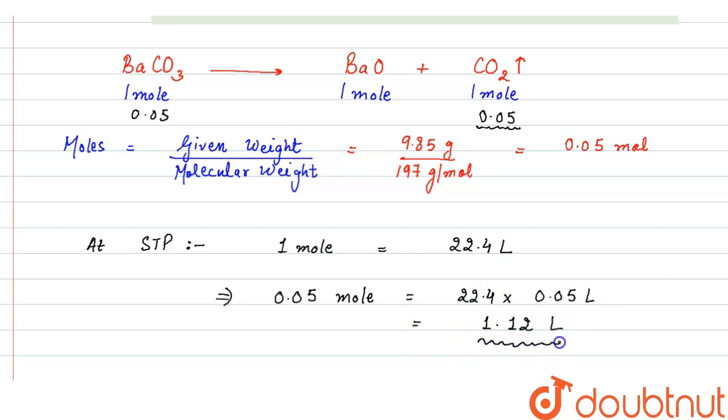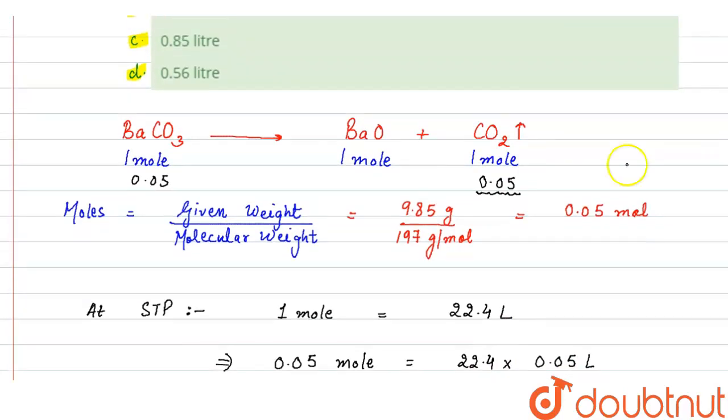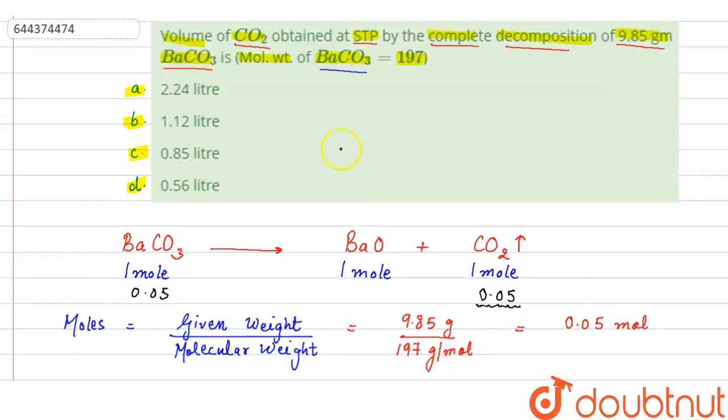So this is the volume which will be occupied by carbon dioxide at STP, or you can say this is the volume of carbon dioxide which will be produced by the decomposition of 9.85 gram barium carbonate. So here the correct option will be option B, 1.12 liter. So option B is the answer.